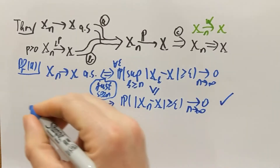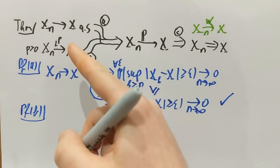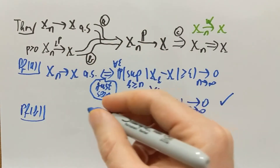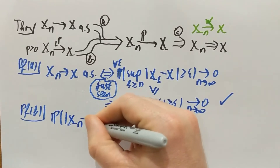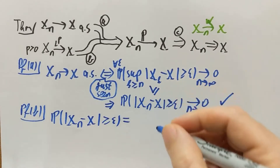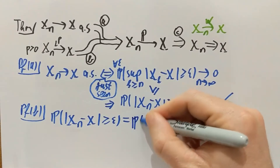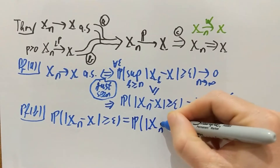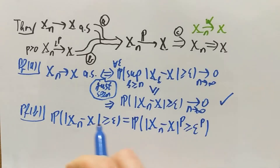Part B is also not very hard. We're assuming Lp convergence and want to show in-probability convergence. I'm going to look at what we need for in-probability convergence: the probability that |Xn minus x| is larger than epsilon. For any positive p, I'll use the fact that on positive numbers, the p-th power is an increasing function. So |Xn minus x|^p is larger than epsilon^p exactly when |Xn minus x| is larger than epsilon.